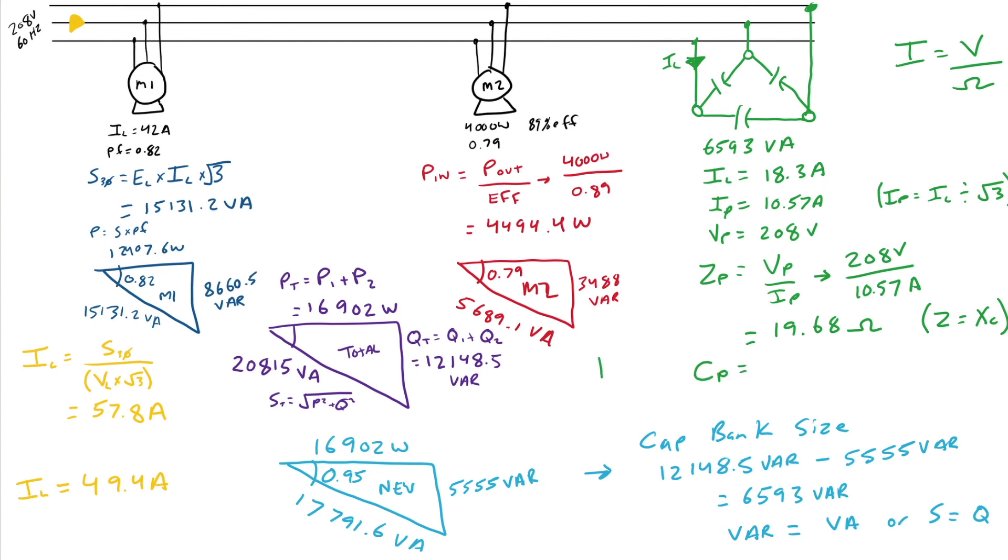So, the very last step that I want to do here is I want to figure out the capacitance of each capacitor. So, I'm going to take my formula of 1 over 2 pi Fc, and I'm going to transpose it to be 1 over 2 times pi times frequency times reactants. And in this case, I find out that each capacitor needs to be 135 microfarads. If they're connected in delta.